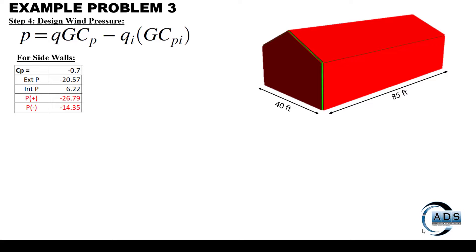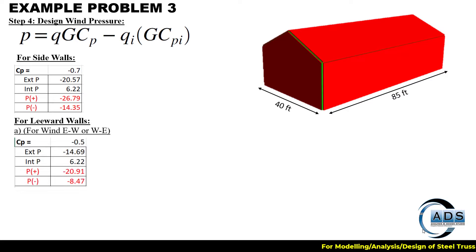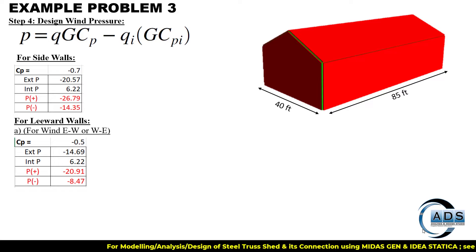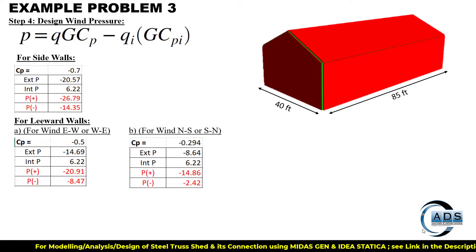Similarly for the side walls where Cp is minus 0.7, the external and internal pressures are shown separately and then the net pressures. For the leeward wall, pressures are computed for both wind west-to-east or east-to-west, and north-to-south or south-to-north directions.